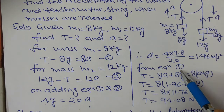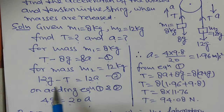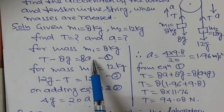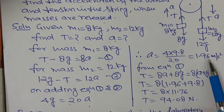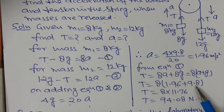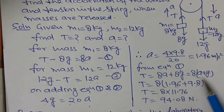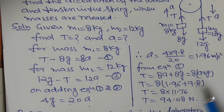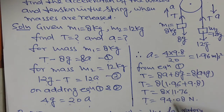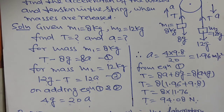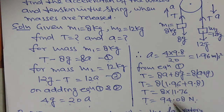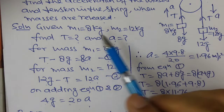Now putting the value of A into equation 1: T equals 8A plus 8g equals 8(A plus g) equals 8(1.96 plus 9.8) equals 8 into 11.76, so T equals 94.08 N. Therefore the acceleration of the system is 1.96 m/s² and the tension in the string is 94.08 N.